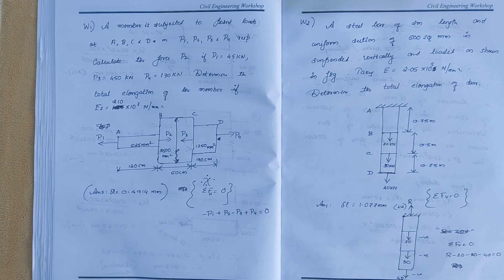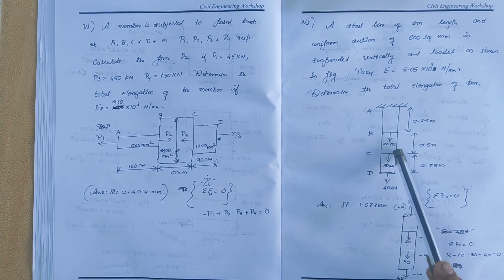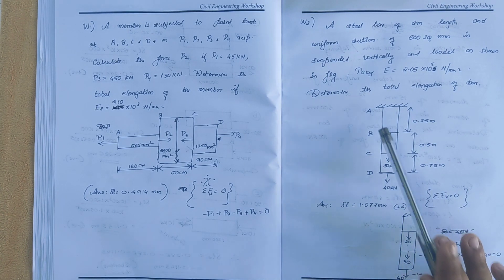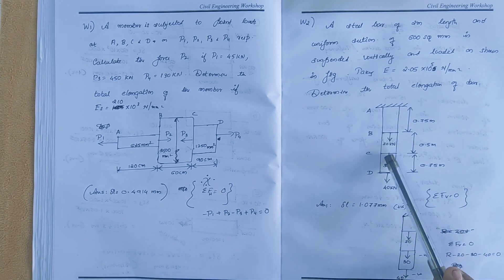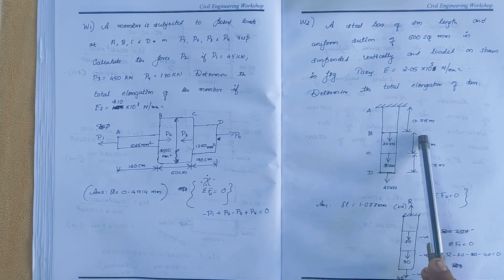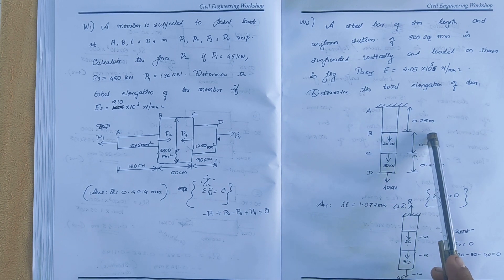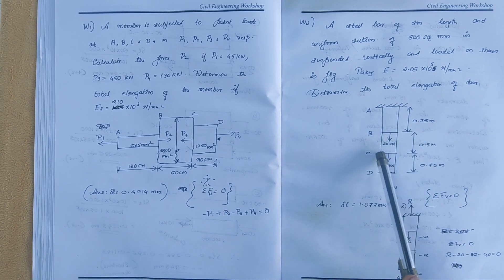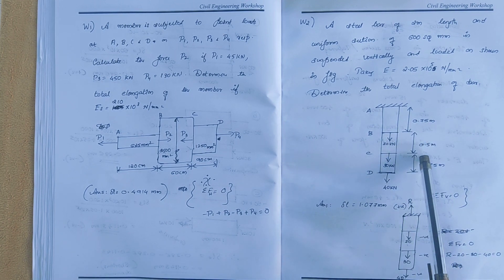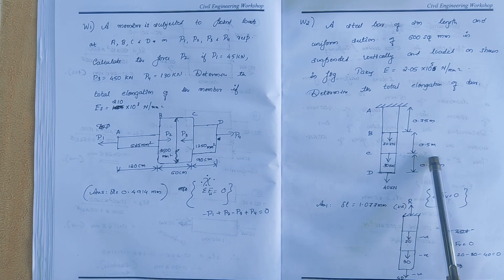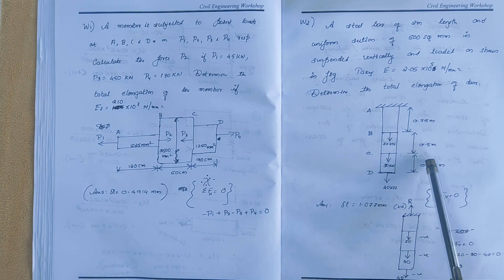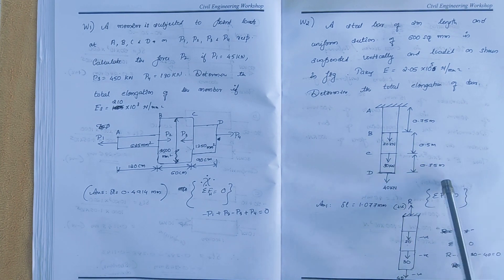There are 3 elements. Element AB has a length of 0.75 m. Element BC has a length of 0.75 m. Element CD has a length of 0.75 m.